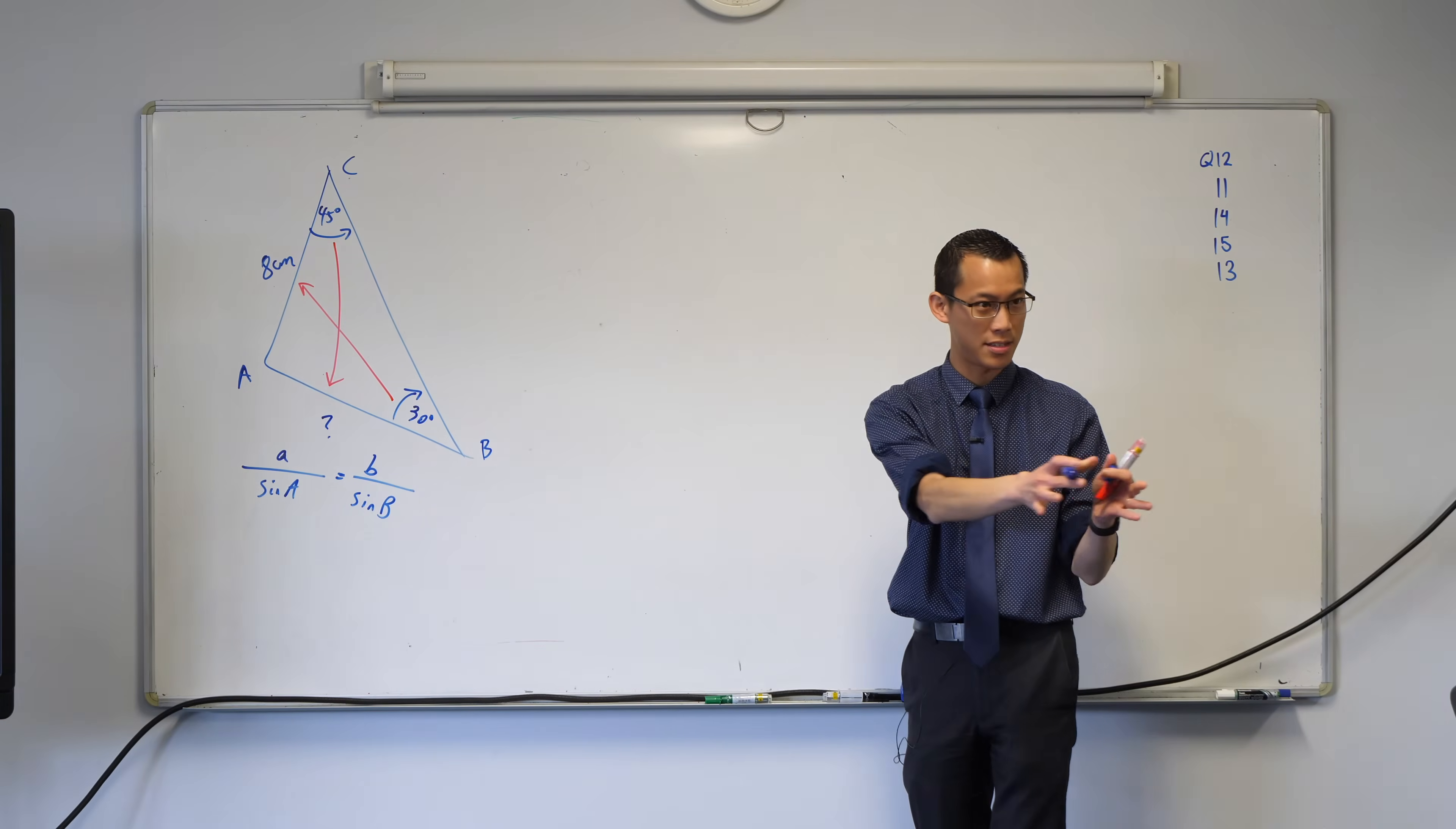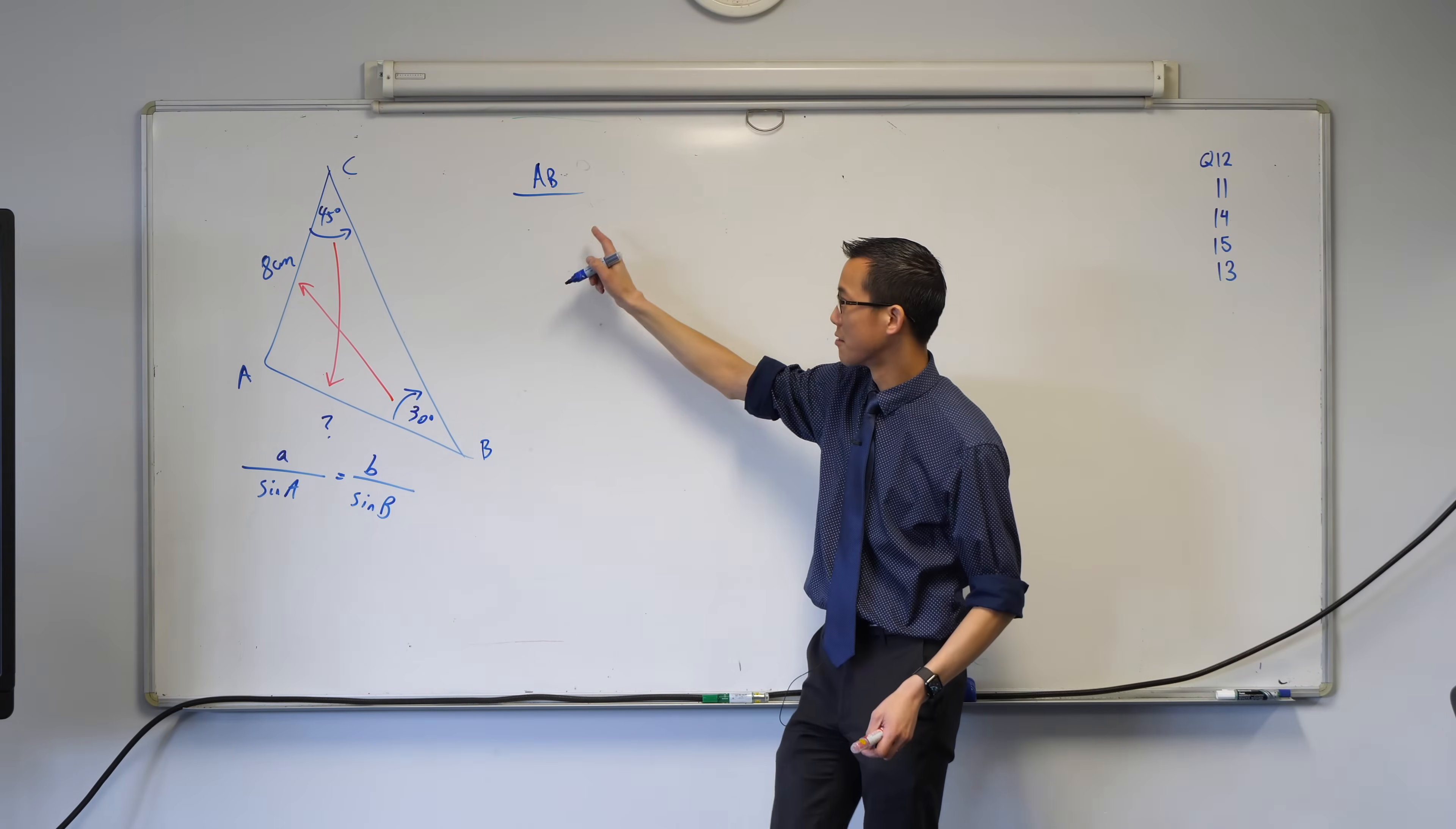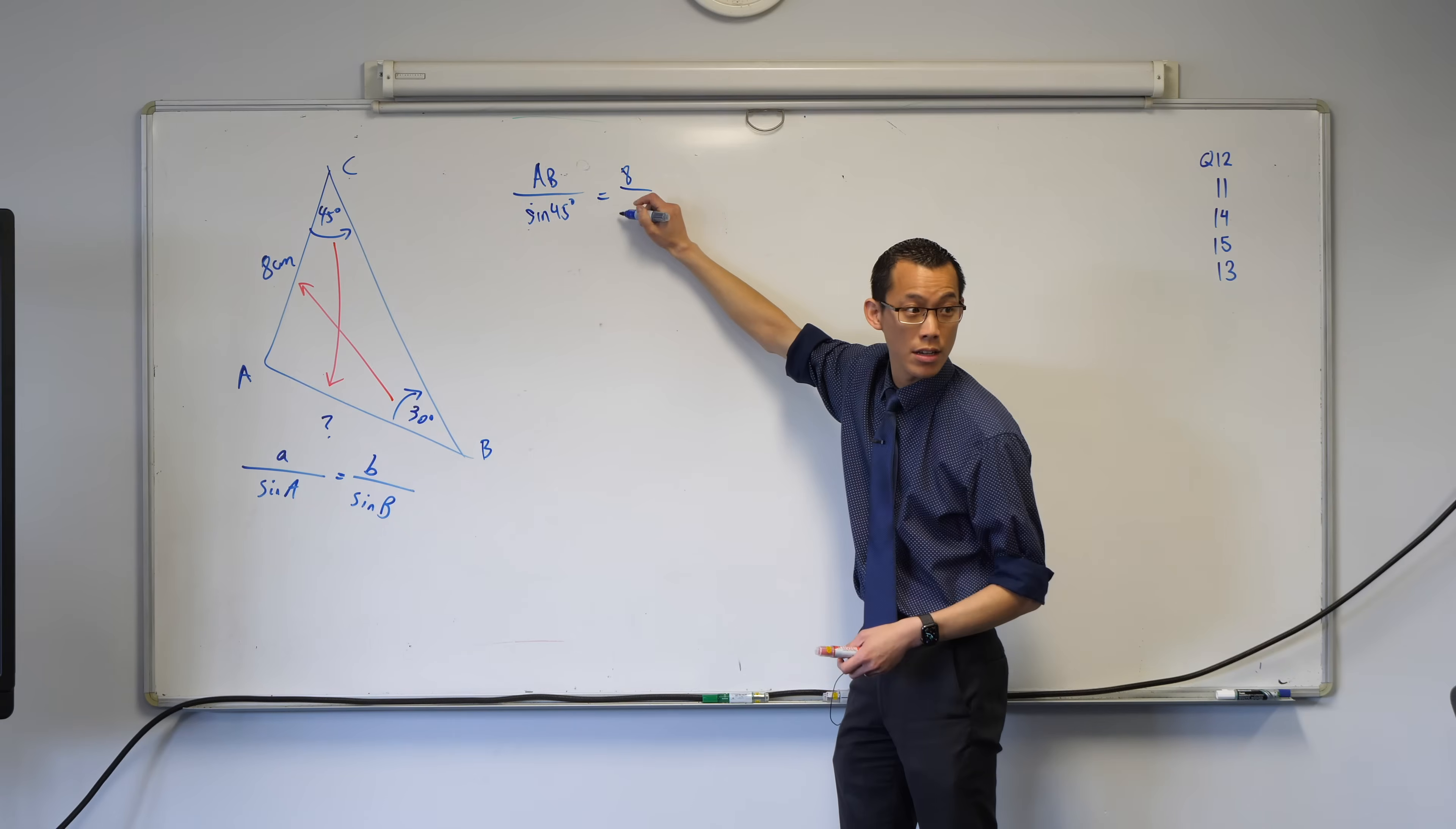Let's start. The unknown is the thing you want to put first because it makes it easier—less rearranging. So my unknown is AB divided by what? Sine of the angle opposite it, which is 45 degrees. So AB over sine 45 equals—and then I've got a known side and angle—8 over sine 30. Fantastic.